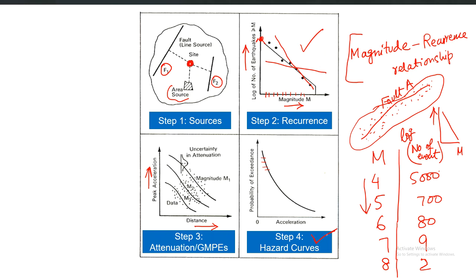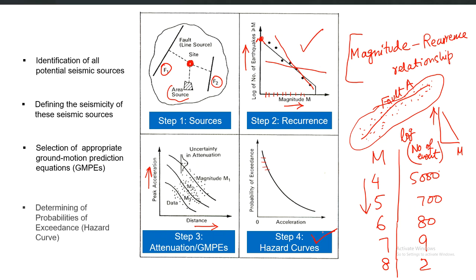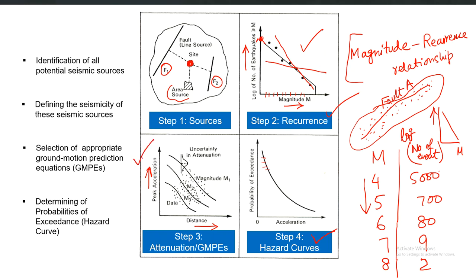Using these GMPEs, the prediction of PGA at the site is expressed not as one number but as a hazard curve, giving PGA values for all possible probabilities of exceedance. The fourth and final step of PSHA is the construction of this hazard curve — summarizing: identification of all potential seismic sources, defining seismicity via the magnitude recurrence relationship, selection of GMPEs, and finally determining the probability of exceedance for each PGA value to calculate the hazard curve for your site.